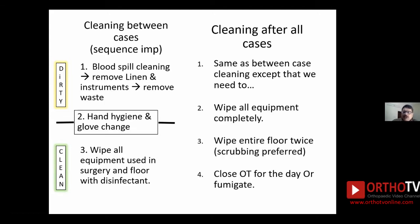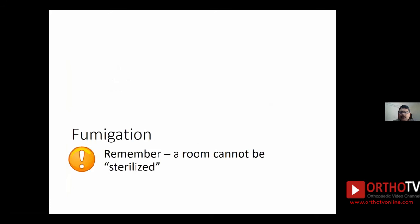For end-of-list cleaning, the steps are the same as between cases, but here we wipe all equipment completely. In the morning we wiped horizontal surfaces; now when all cases are over, the entire table, entire anesthesia machine, entire suction machine — everything has to be wiped from top to bottom. The floor should ideally be wiped twice; if you have a scrubbing machine, scrub the floor with soap water first and then wipe with a disinfectant. After this the OT is either closed for the day or you proceed to fumigation.